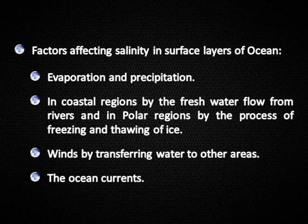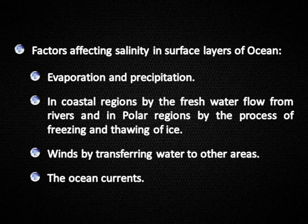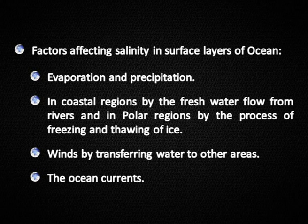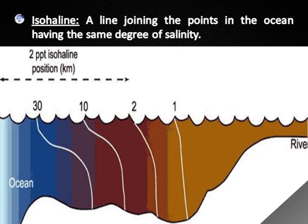Factors affecting salinity in surface layers of the ocean include: evaporation and precipitation; in coastal regions, fresh water flow from rivers; in polar regions, the process of freezing and thawing of ice; winds, by transferring water to other areas; and ocean currents. An isoheline is a line joining points in the ocean having the same degree of salinity.